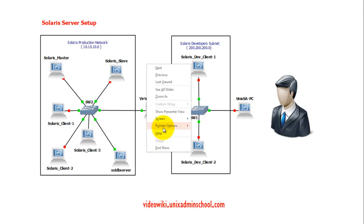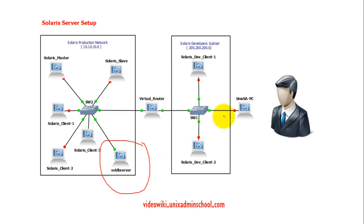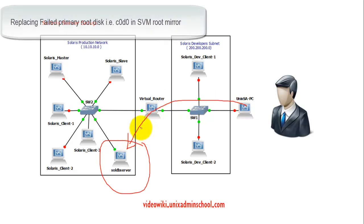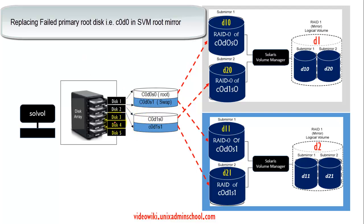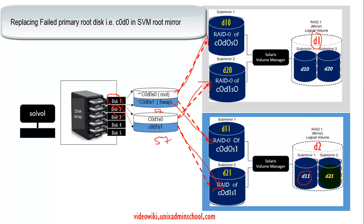For the demonstration I will be connecting to a Solaris DB server where we have our root mirror configuration, connecting from NXSAPC. The existing root mirror configuration is as follows: we have two disks, disk 1 and disk 2, each partitioned into slices C0D0S0, C0D0S1, and S7 for database replicas. C0D0S0 was configured as D10, a RAID-0 volume, and C0D0S1 as D11, with D20 and D21 on the second disk. Using SVM, D10 and D20 formed the D1 mirror component, and D11 and D21 formed the D2 mirror component.